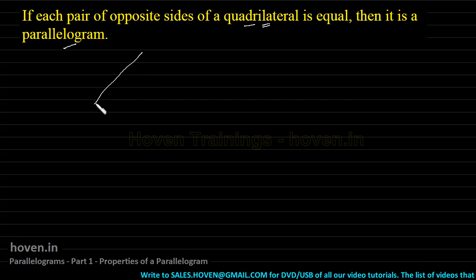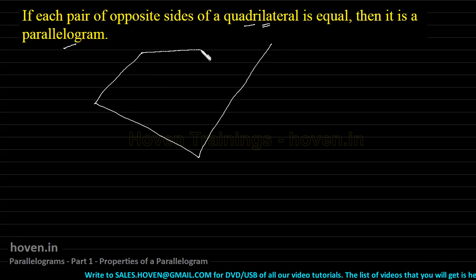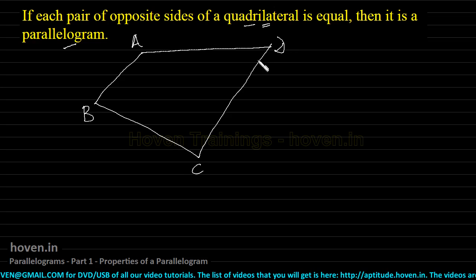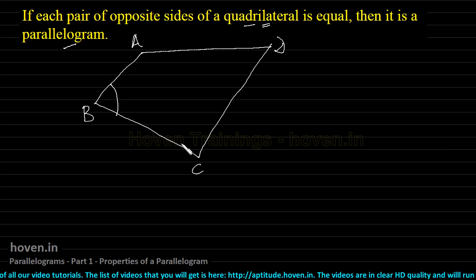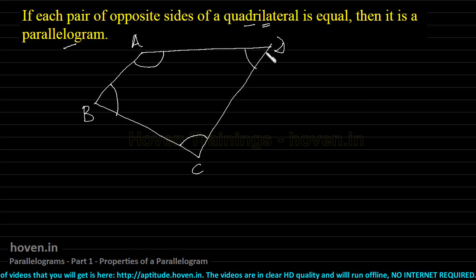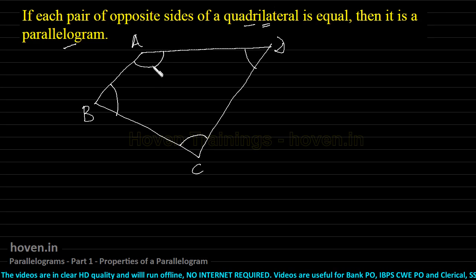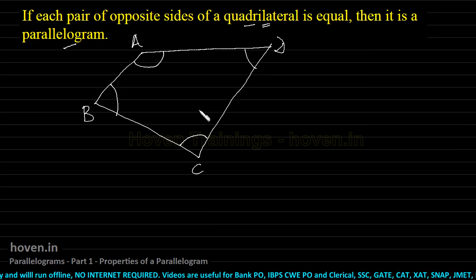A quadrilateral is any figure that has four corners, like A, B, C and D. This is a quadrilateral ABCD. It can have angles of any measure. The sides can have any lengths. There will be four sides. There may or may not be any relation between the four sides or between its angles. So any figure with four corners is a quadrilateral.